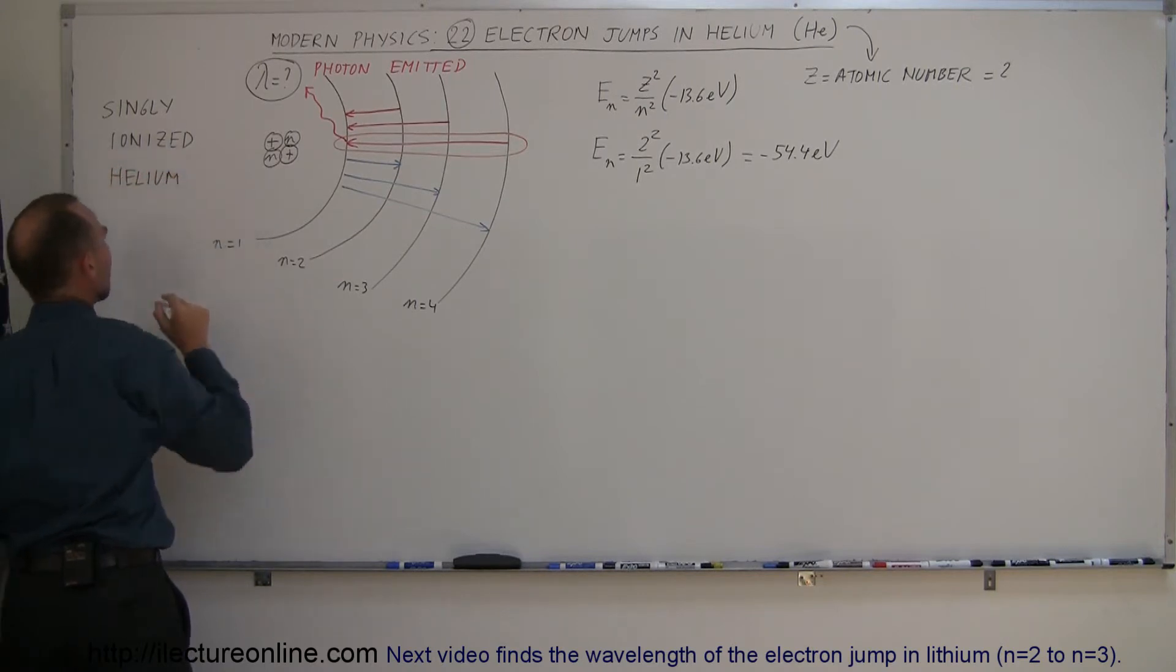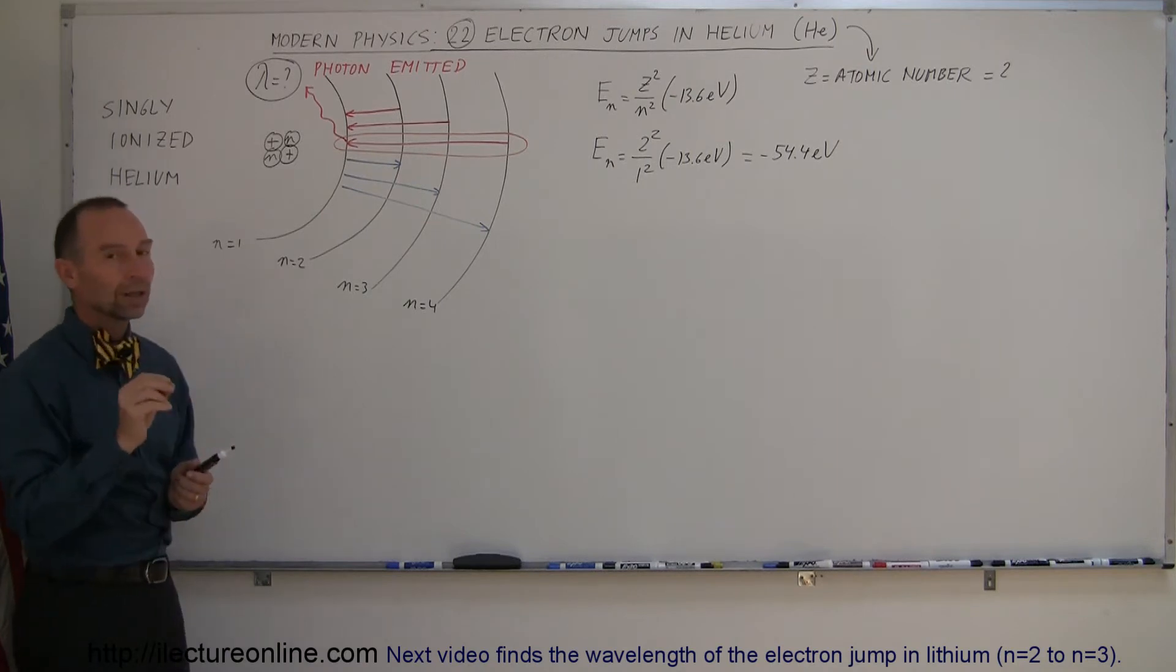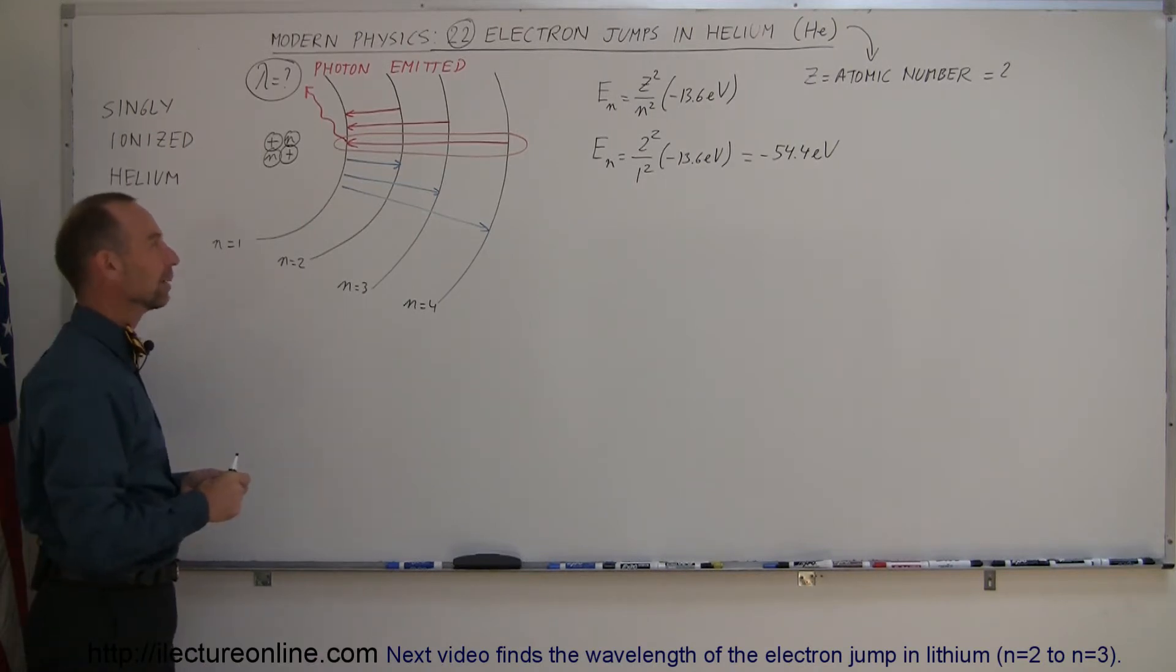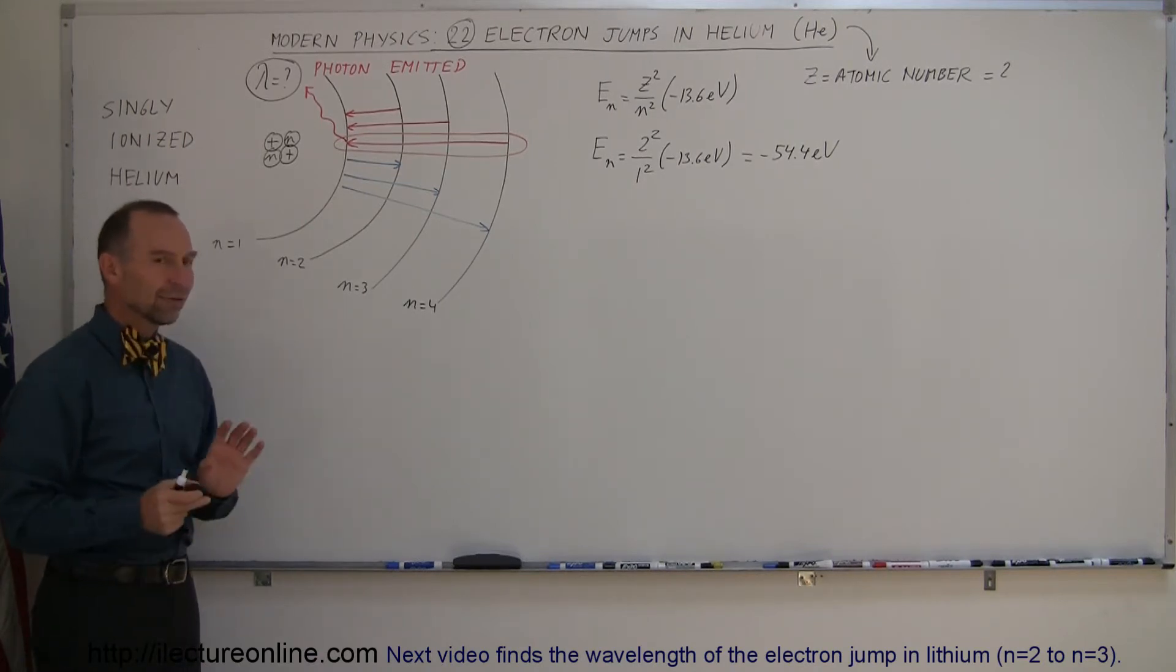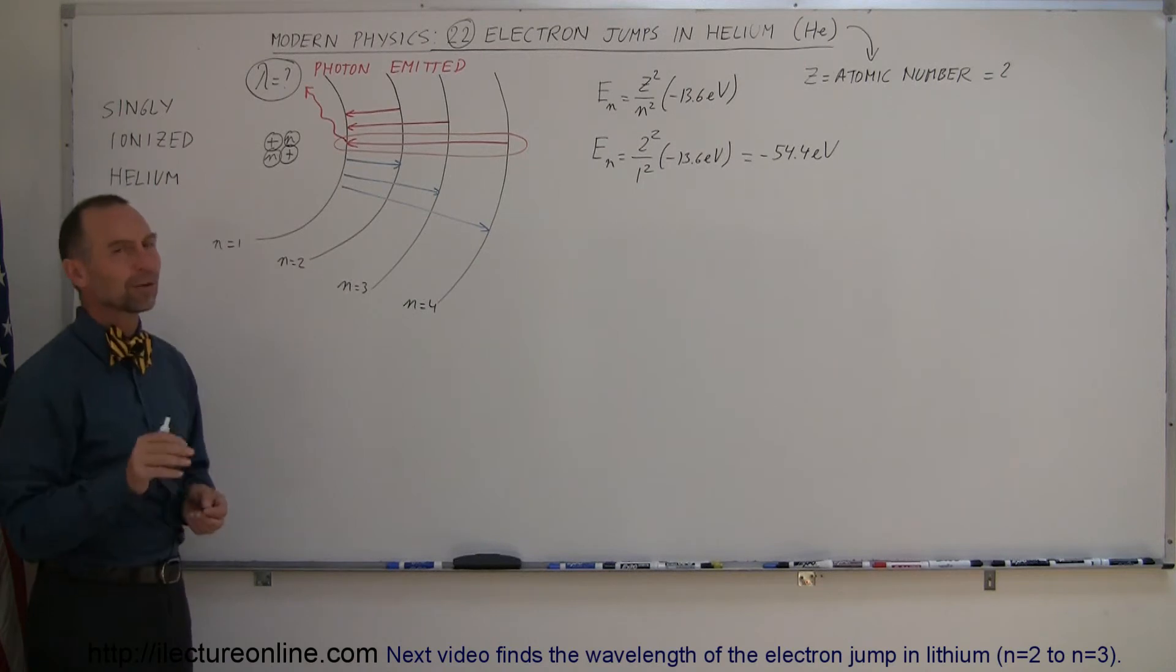That means we can only use these equations if the helium atom only has one electron left. The other one has already been removed through some process. So we're dealing with actually a simplified version of the helium atom. If you do the equations with two electrons in the orbit, in the innermost orbit, like it normally is, then that becomes much more complicated, well beyond this course right here.